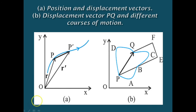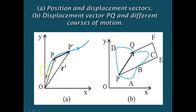To describe the position of an object moving in a plane, we need to choose a convenient reference point. Whenever we say an object is moving, in order to describe its position, we need to choose some reference point. You can see in this particular graph — you can take O as the origin.